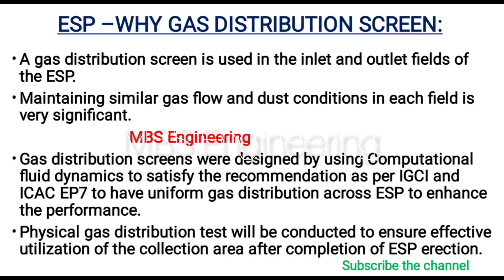Now we understand why a gas distribution screen is required in the electrostatic precipitator. Point 1: A gas distribution screen is used in the inlet and outlet fields of the ESP. Point 2: Maintaining similar gas flow and dust conditions in each field is very significant. Point 3: Gas distribution screens were designed using computational fluid dynamics to satisfy the recommendation as per IGCI and ICAC EP7 to have uniform gas distribution across the ESP to enhance performance.